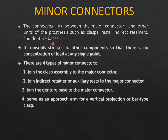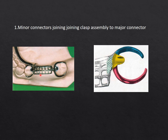Moving to minor connectors: these are the connecting links between major connectors and any other part of the prosthesis — a rest, indirect retainer, sprocket/collar, clasp, direct retainer, or lattice framework. Like small screws, washers, or nuts, they connect different components and transmit stresses so there is no load concentration at any single point. There are four types: those joining the clasp assembly to the major connector; those joining retainers and auxiliary rests to the major connector; those joining the denture base to the major connector; and those serving as the approach arm for the vertical projection of the I-bar clasp in the RPI system.